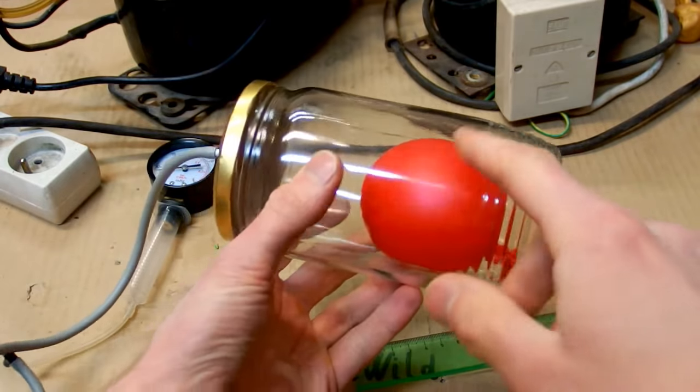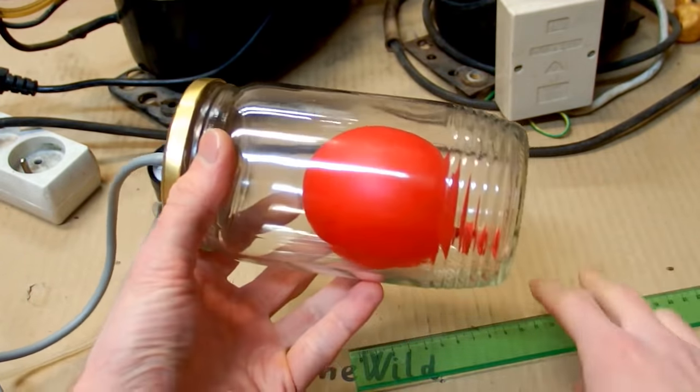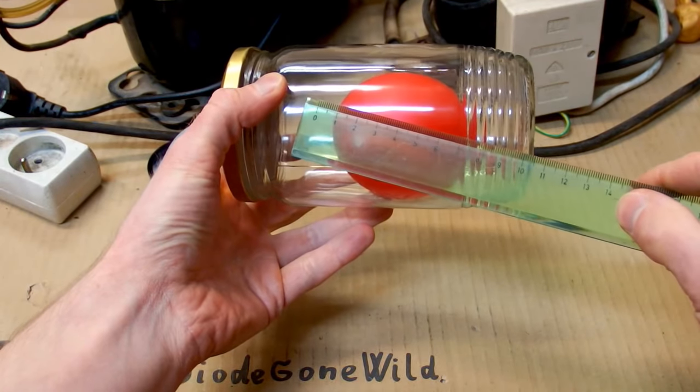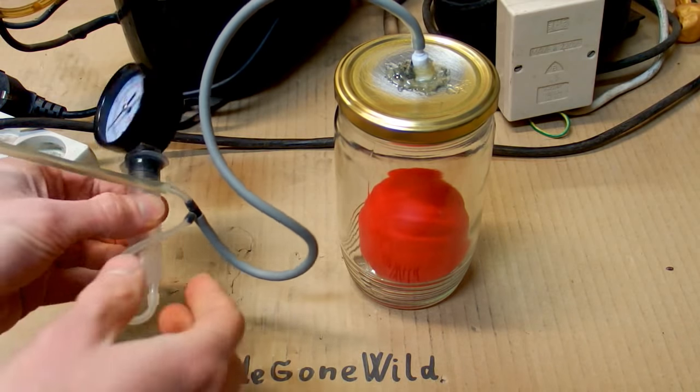As the pressure goes down, the air in the balloon is expanding. And this is why the balloon is getting bigger under a vacuum. And it's really about 7 centimeters. Now let's open it and see what happens.